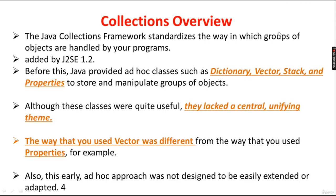The Java Collection Framework standardizes the way in which groups of objects are handled by your program. This Collection Framework was added in Java SE 1.2. Before Java 1.2, Java provided ad hoc classes such as Dictionary, Vector, Stack, and Properties to store and manipulate groups of objects. After 1.2, it introduced the Collection interface.